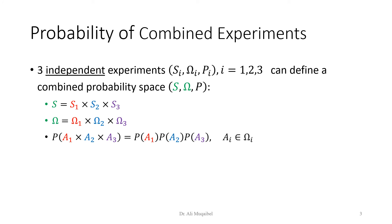Now, if we make combined experiments, how do you find the probability? For three independent experiments, for example, we can have a sample space for each one, define events, and have individual probabilities — so how do you find the combined probability?